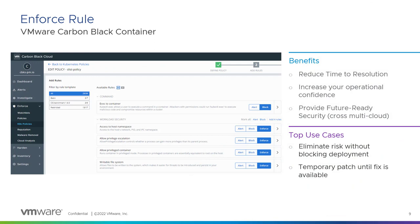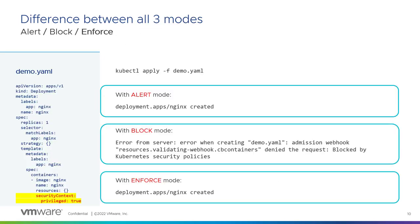A technical overview of the product. In the hardening policy, we now have three modes: alert, block, or enforce. The top use case to remember is that you can eliminate the risk without blocking deployments, and you can have a temporary patch until a fix is available. What's the difference between all three modes — alert, block, and enforce?